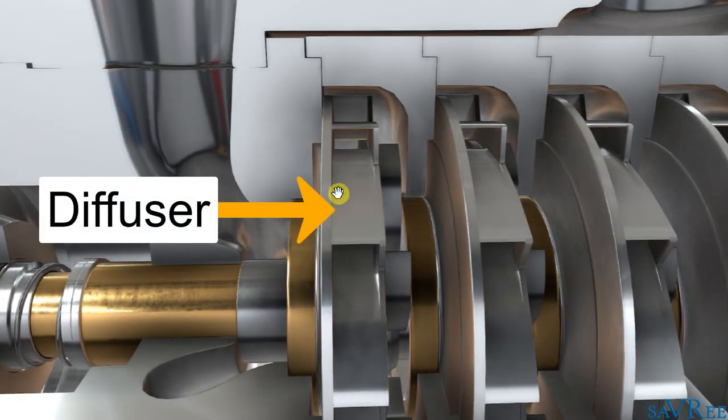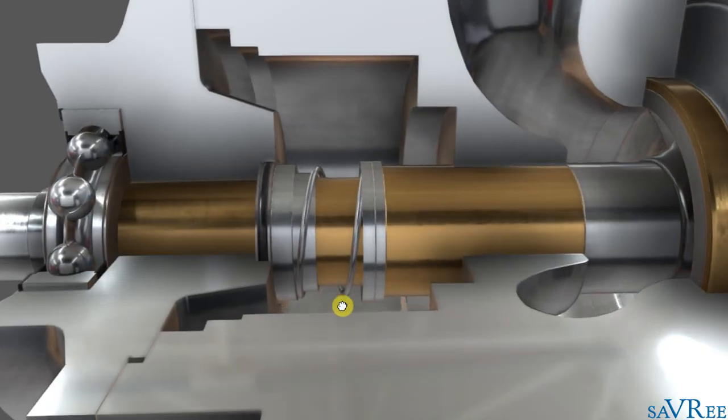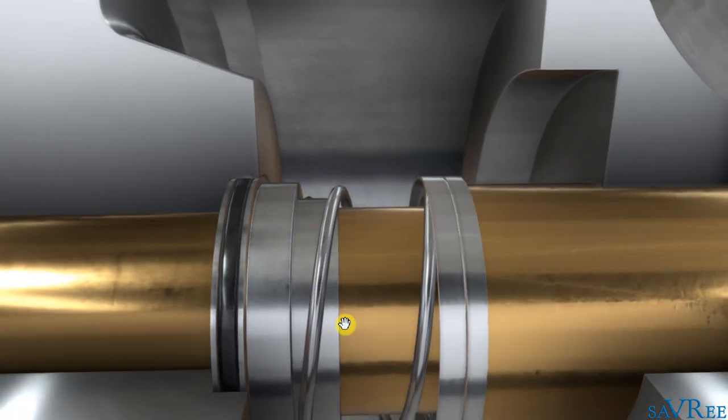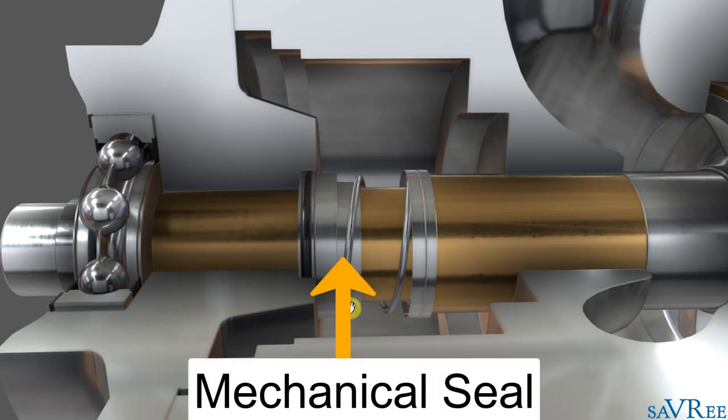This is the diffuser here. The diffuser is stationary, and the impeller rotates within the diffuser. We've got a sealing arrangement on the left. This is a mechanical seal. The mechanical seal is used to seal the space between the pump shaft and the pump casing. This prevents any leakage.